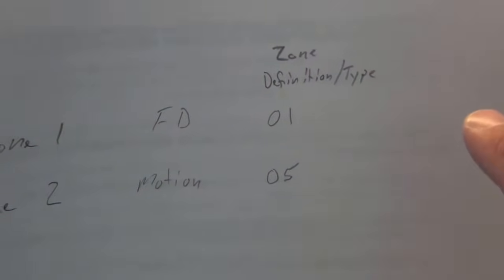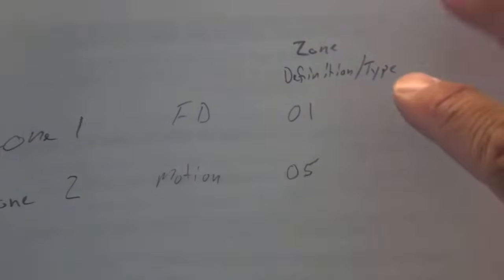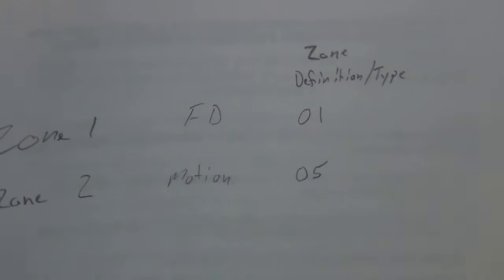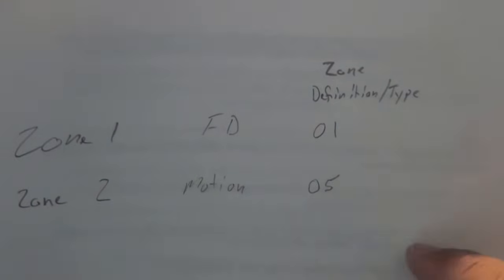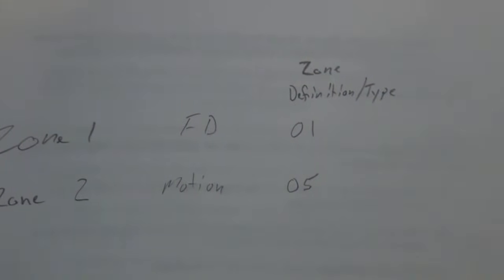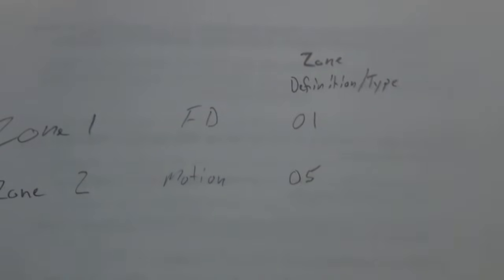There's several different types of definitions. Zero one for example is an entry exit door, that will give me an entry exit delay. When I come and leave I can come in and out that door. Zero five is an interior stay or away, it's typically used for motion detectors.